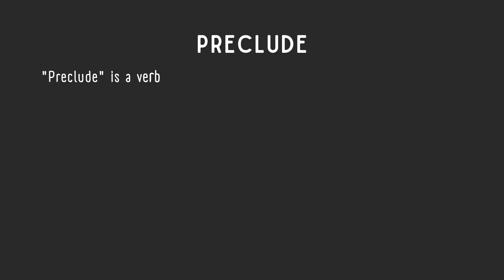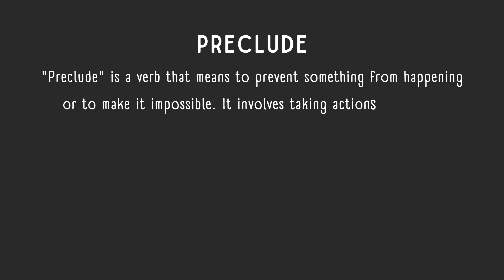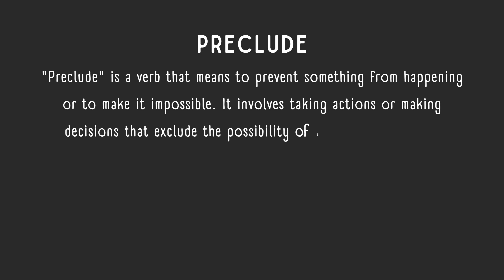Preclude is a verb that means to prevent something from happening or to make it impossible. It involves taking actions or making decisions that exclude the possibility of a particular event or outcome.